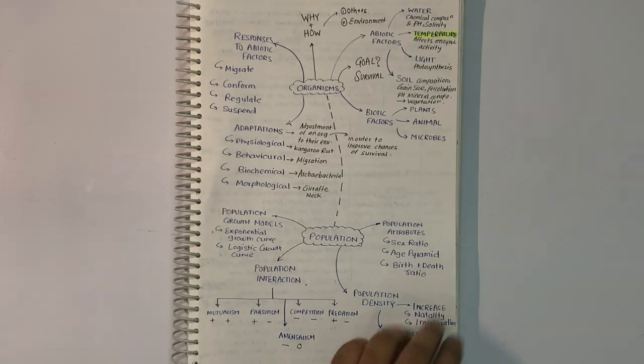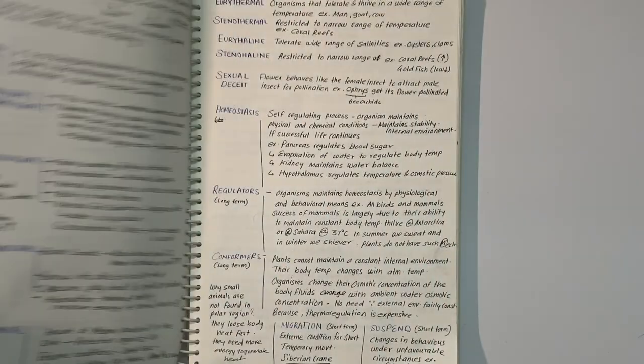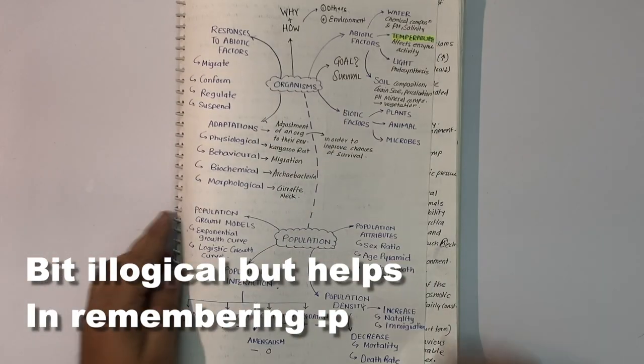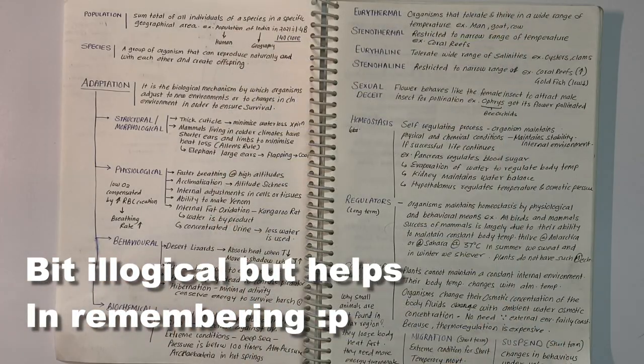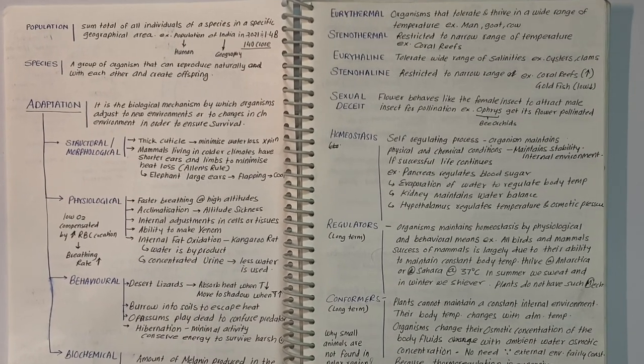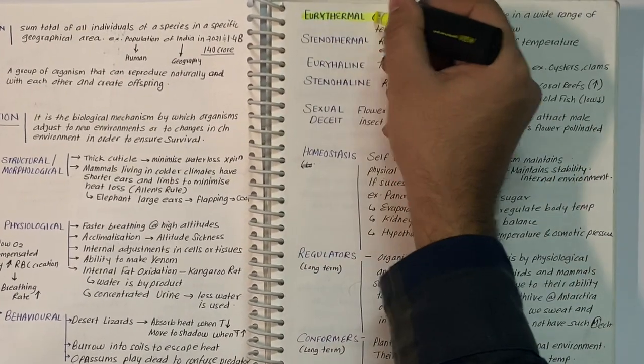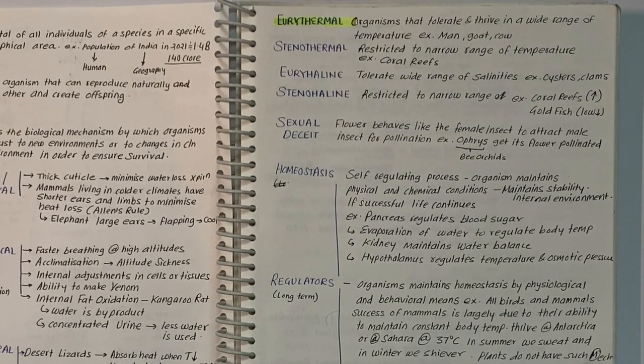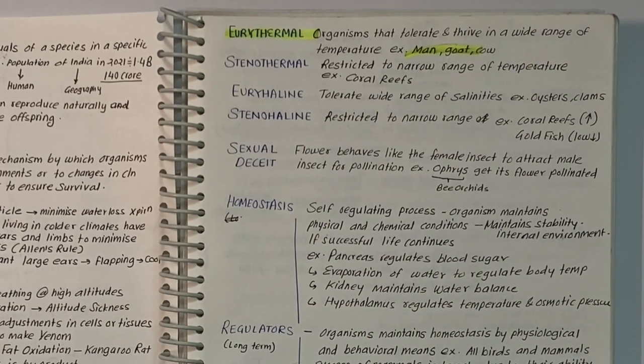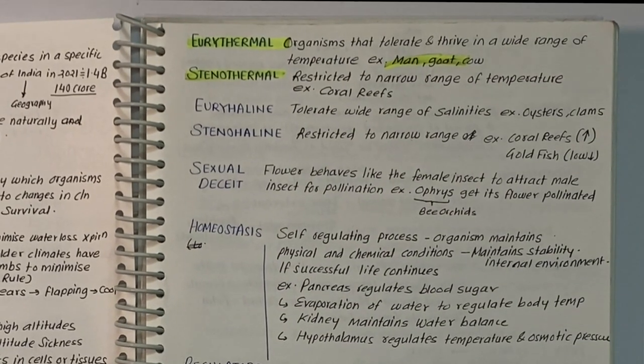Some organisms tolerate and thrive in a wide range of temperature - they are eurythermals like man, goat and cow. A vast majority are restricted to narrow range of temperature - they are stenothermals. Examples include reptiles, crustaceans, insects, salmons, penguins, python and crocodile.